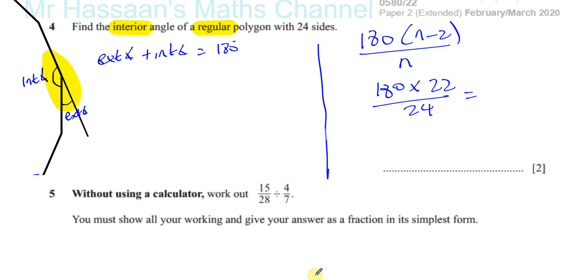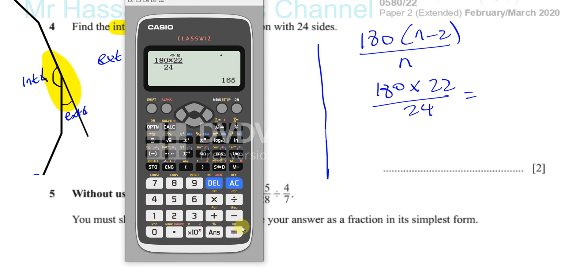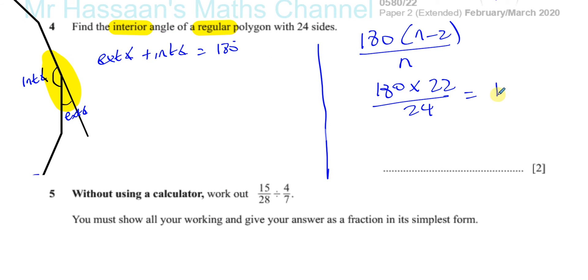Let me find my calculator to make sure. So you have 180 multiplied by 22, divided by 24, and that gives us 165 degrees, and there's our answer.